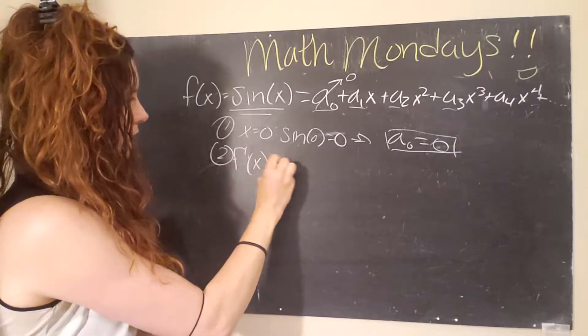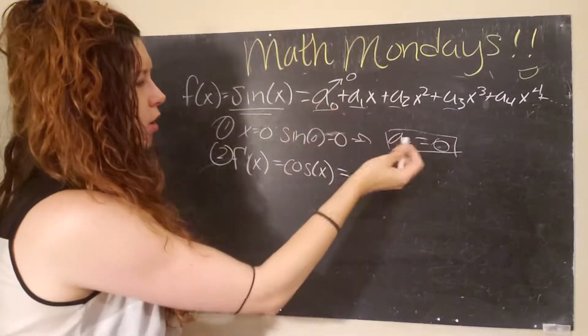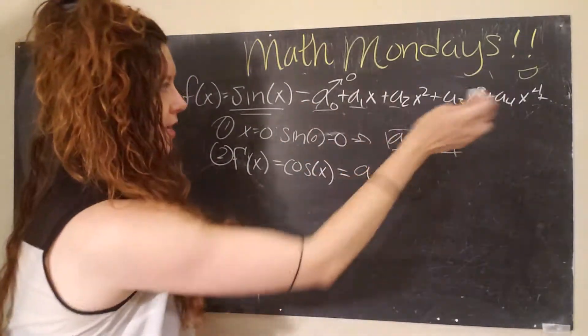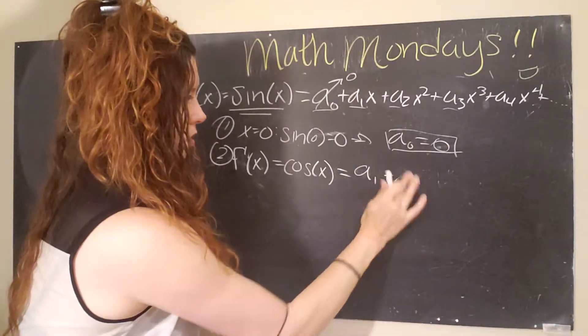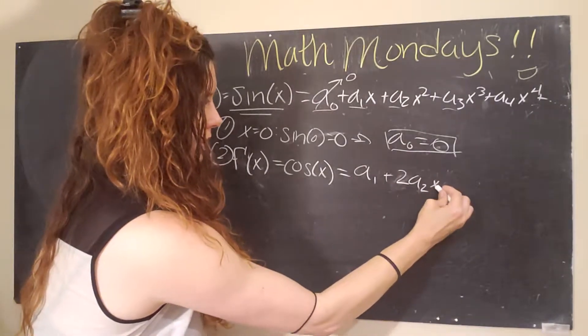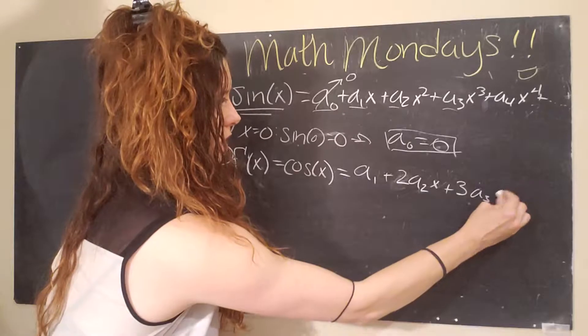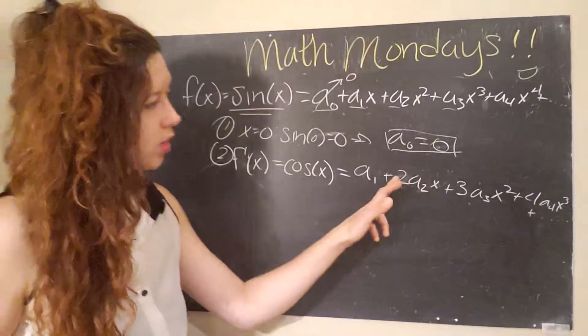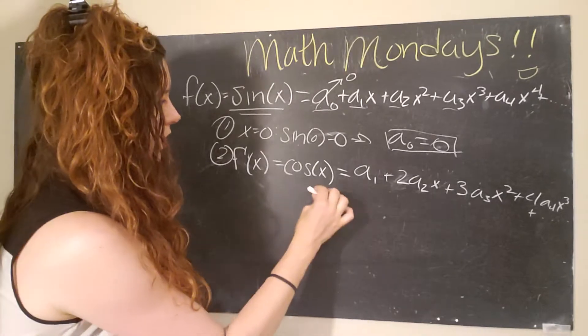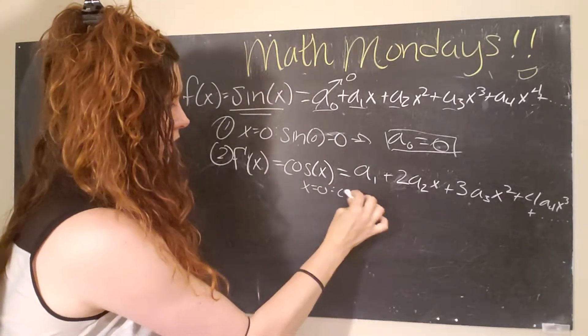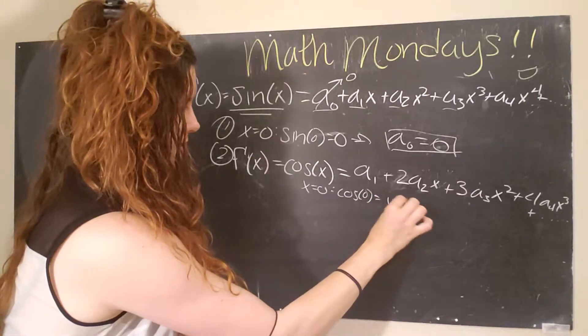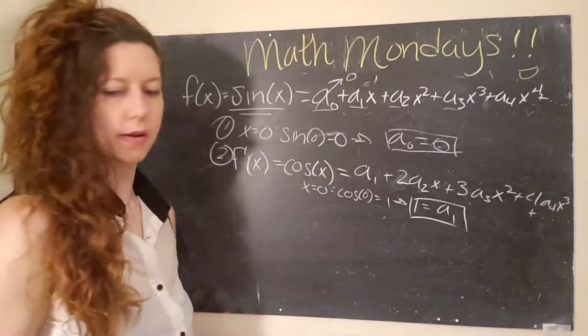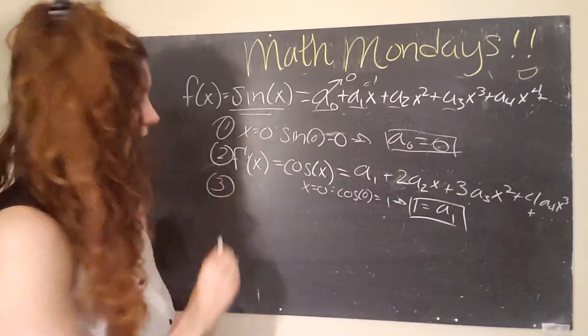And we are going to get, remember, a zero, even if it was a number, it would just go zero because it's a constant. So the derivative of the right side is going to be a one plus two a two x plus three a three x squared plus four a four x cubed plus da da da. And now we want all of these x's to go to zero again. So we say, okay, we'll let x equals zero. Cosine of zero equals one. So one equals a one. Oh, look at that. These coefficients are dropping super quick.